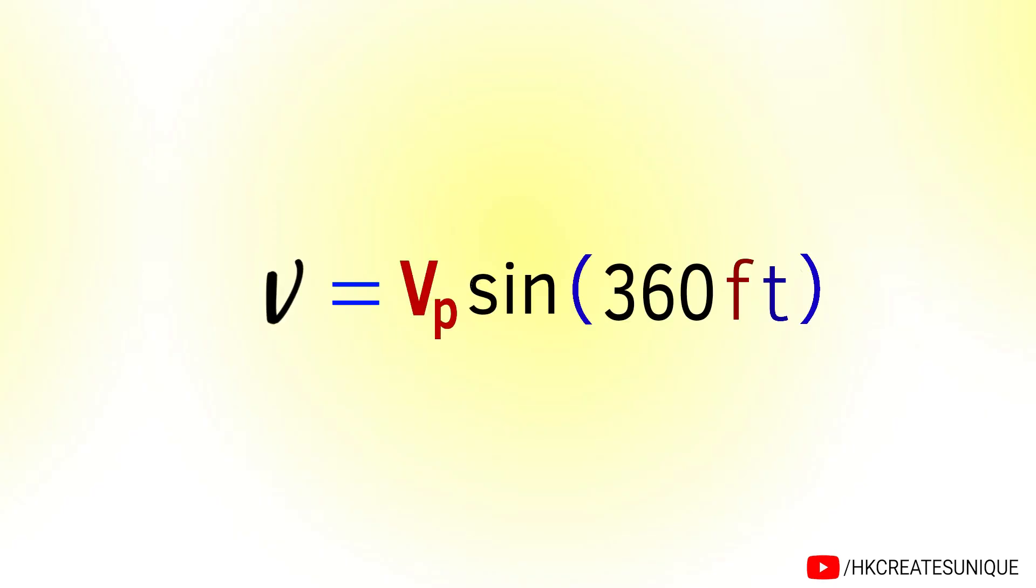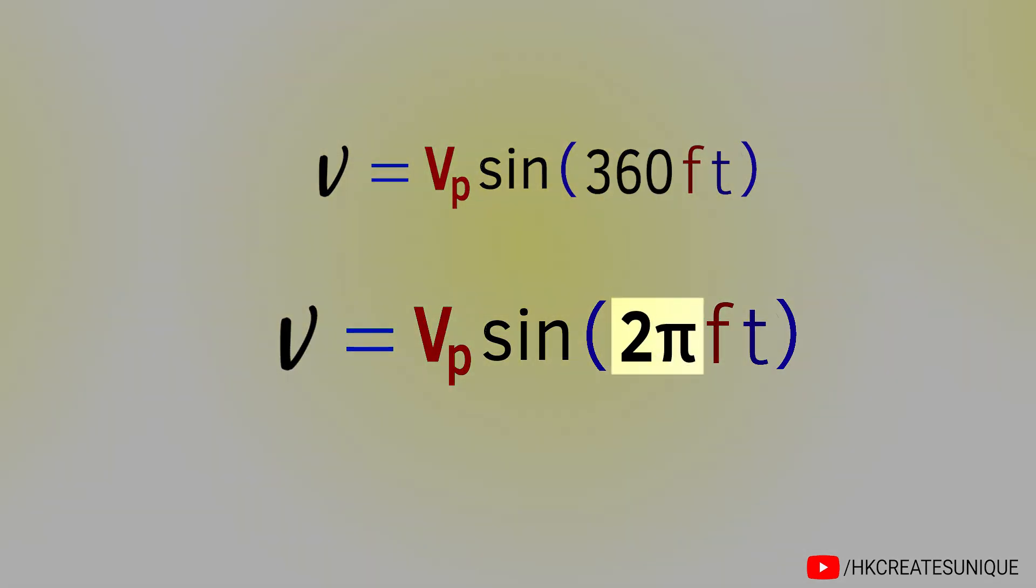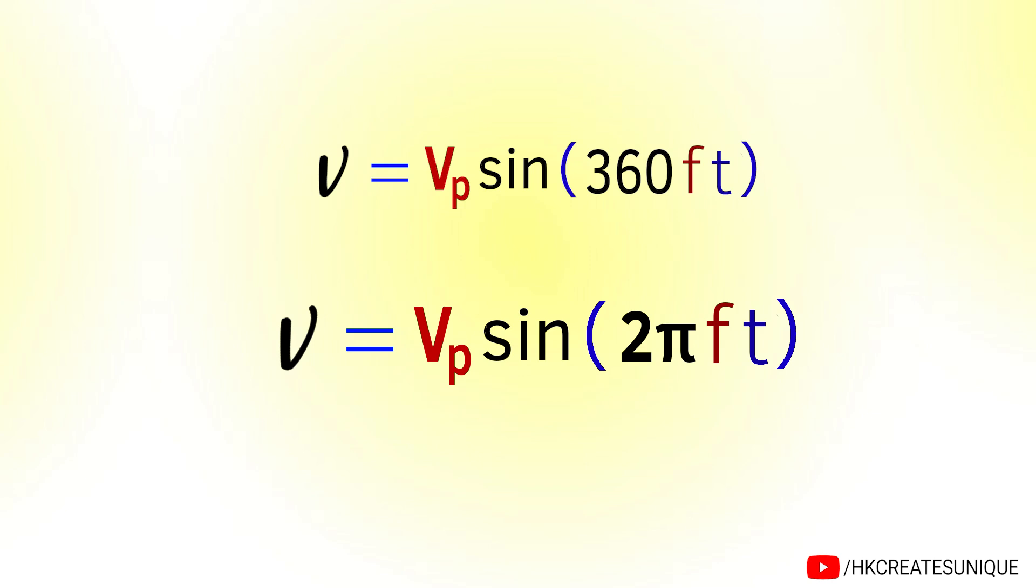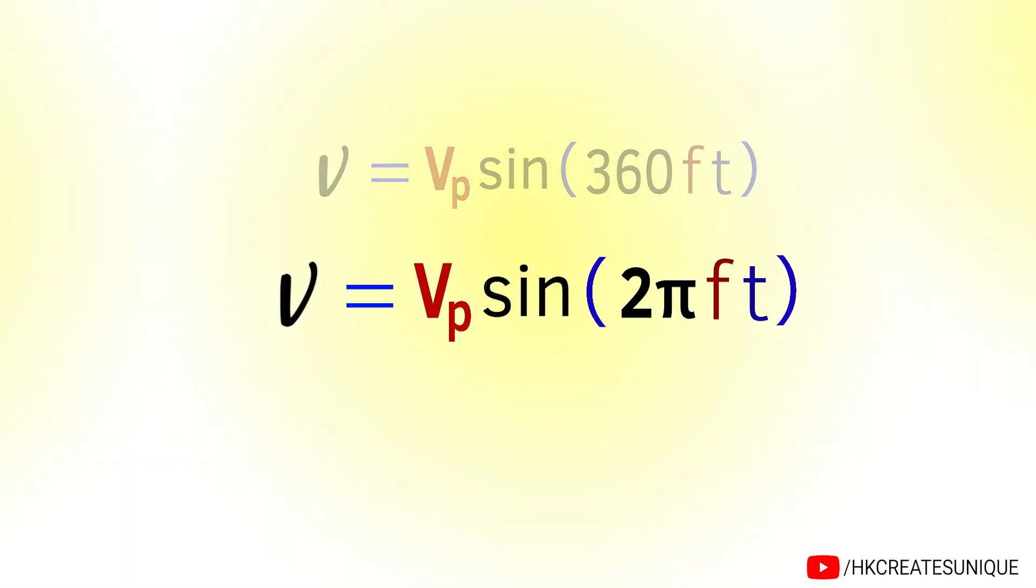The sine wave voltage equation in terms of radians will be this. 360 degrees is 2 pi radians. Also in the equation, 2 pi frequency is called angular frequency, denoted by omega. So the equation can be written as this.